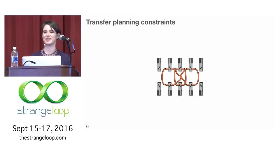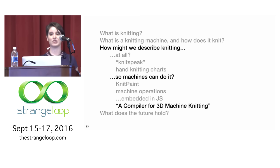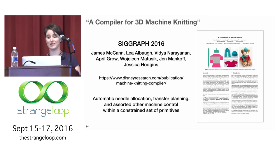So I'm going to talk a little bit about another project, which is a compiler for 3D machine knitting. So this is my team's SIGGRAPH 2016 technical paper. And so that's my boss, Jim McCann, myself, Vidya, April, Wojciech, Jen, and Jessica Hodgins. You can read our paper online, disneyresearch.com. And the deal with this paper is we present a constrained set of primitives. So it's just tubes and sheets. And they have some parameters in both their final form and the production instructions.